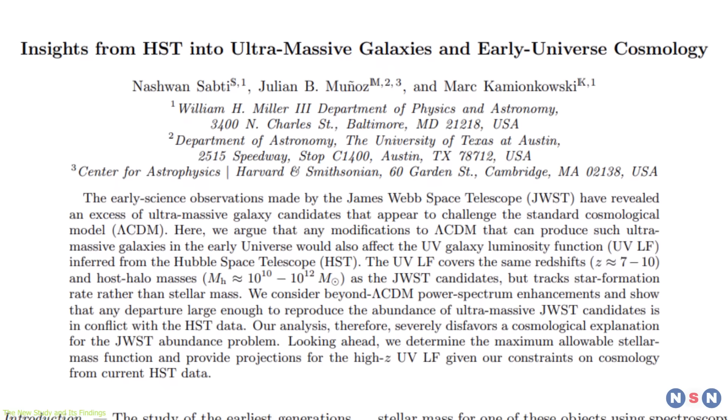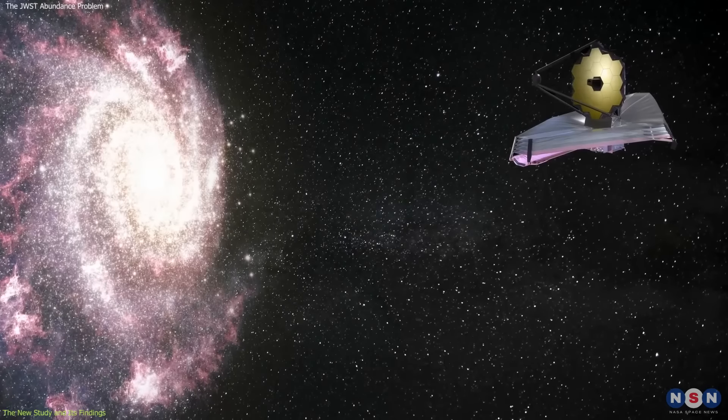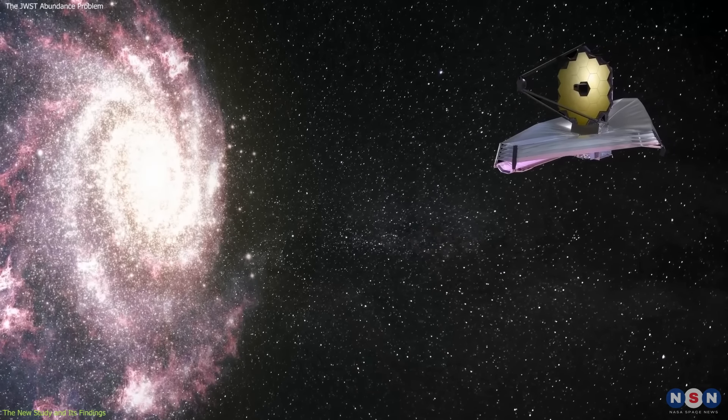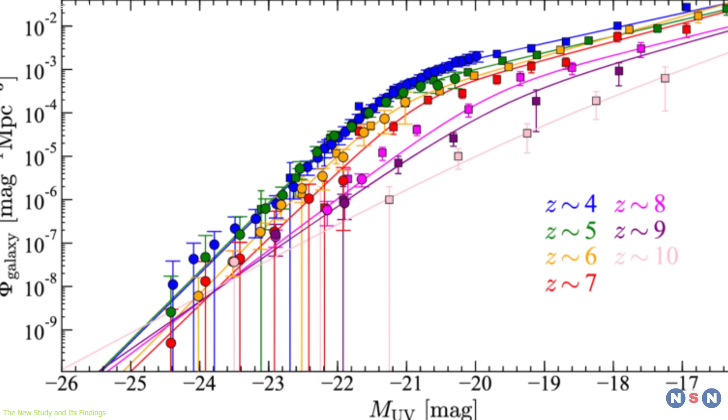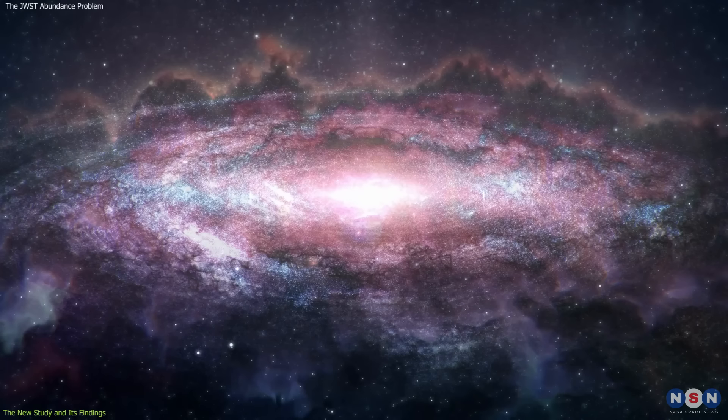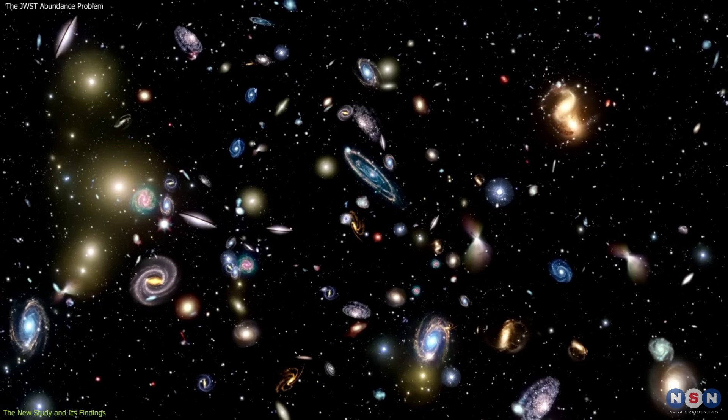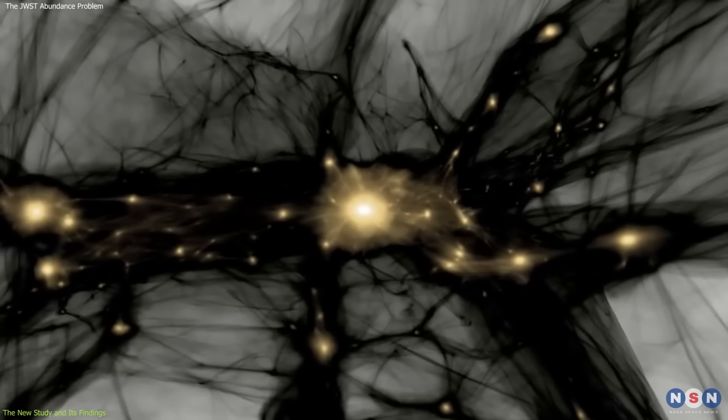The study shows that any modifications to the standard cosmological model that can produce the ultramassive galaxies detected by James Webb would also affect the ultraviolet galaxy luminosity function inferred from Hubble. This is because the ultramassive galaxies and the smaller galaxies are both made of ordinary matter, and they both trace the underlying distribution of dark matter in the early universe.